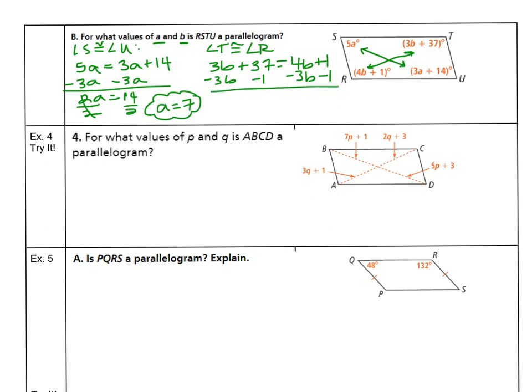And now I do get 36. 37 minus 1 is 36. On the right, 4B minus 3B is just plain B. So B has to equal 36. And then angles R and T are congruent. When opposite angles are congruent, then the quadrilateral is a parallelogram.